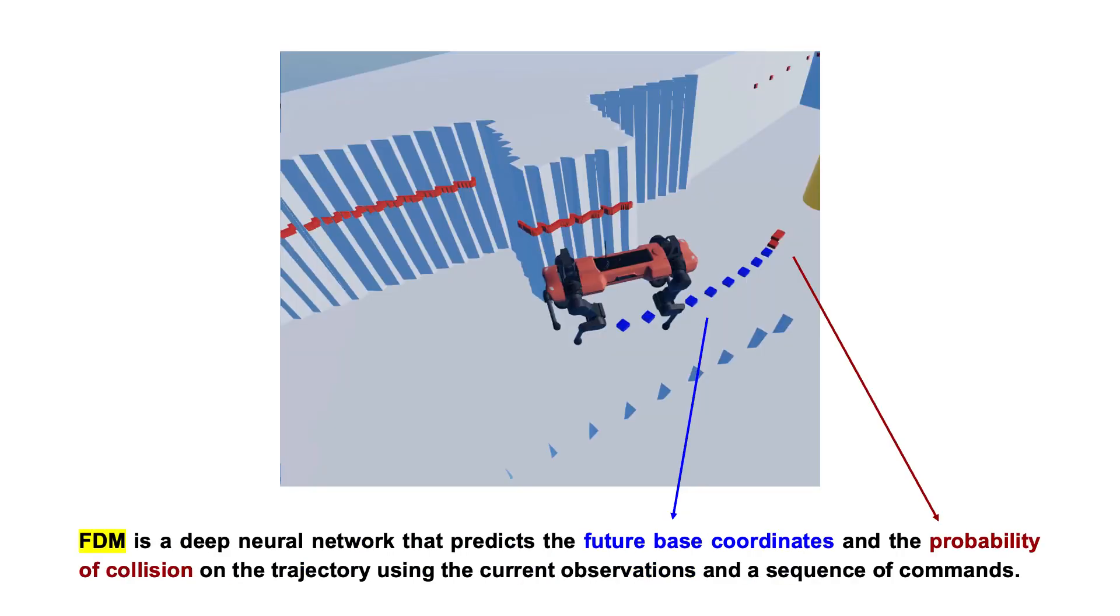FDM is a deep neural network that predicts the future base coordinates and the probability of collision on the trajectory using the current observations and a sequence of commands.